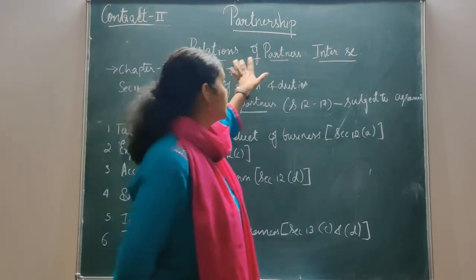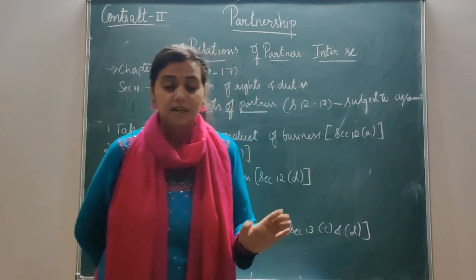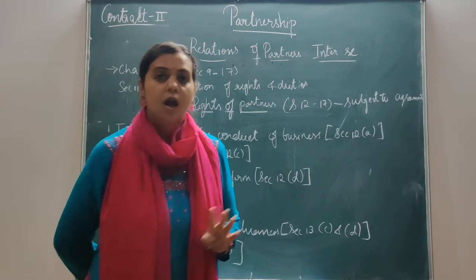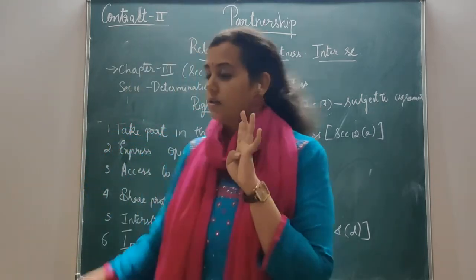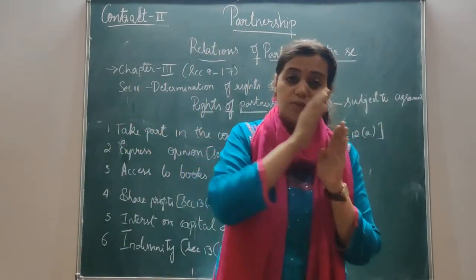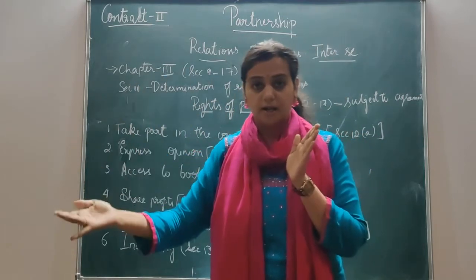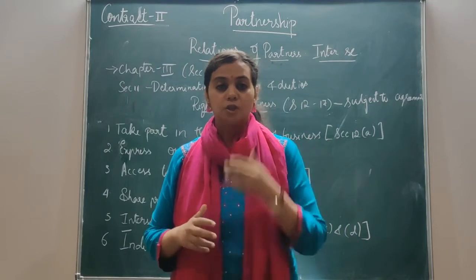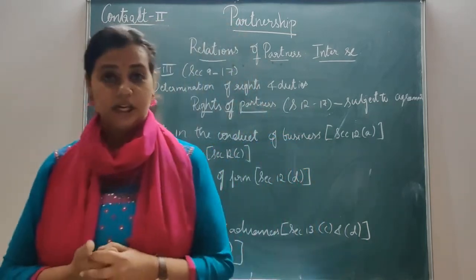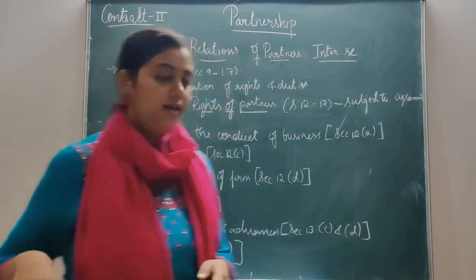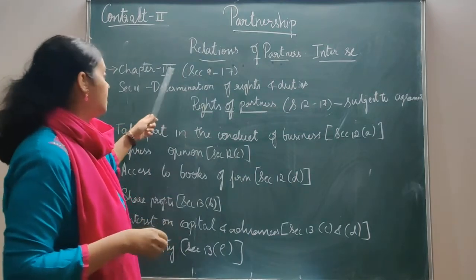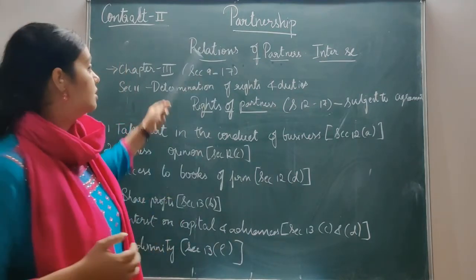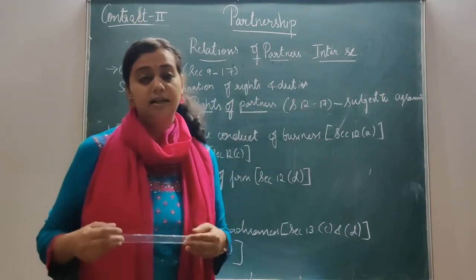So, relation of partners between themselves — for example, if there are four partners in the firm, we are studying what is the relation between the first partner and the rest of the partners, the second partner and the rest of the partners. Chapter 3, that is, Section 9 to 17, gives you the relations of partners inter se.